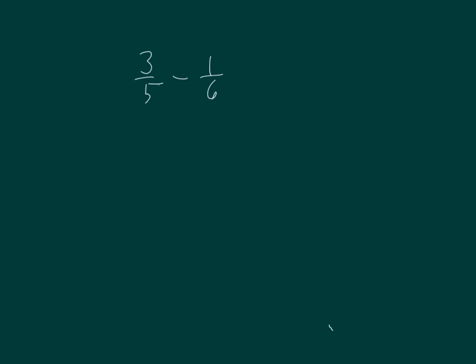Here I have three-fifths minus one-sixth. What does this equal? I need to make smaller units. I can multiply the numerator and denominator by six over six, and multiply the numerator and denominator by five over five, to rename these units and get like units so that I can subtract them.